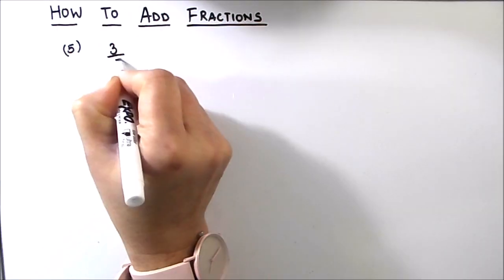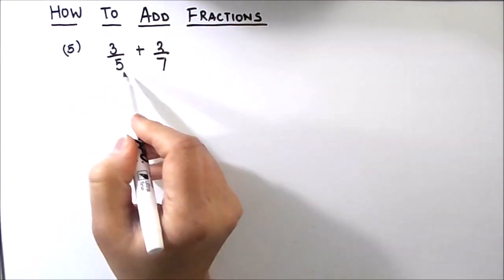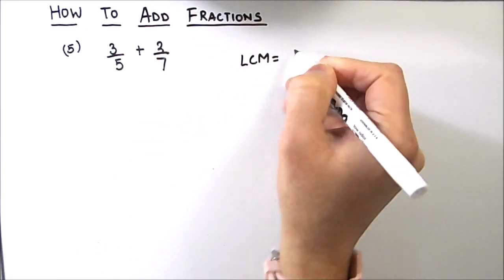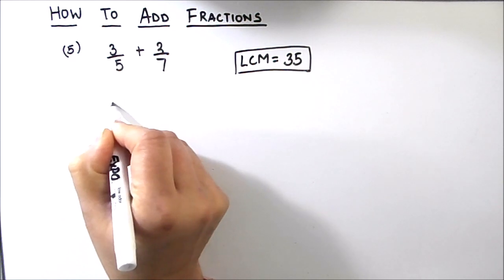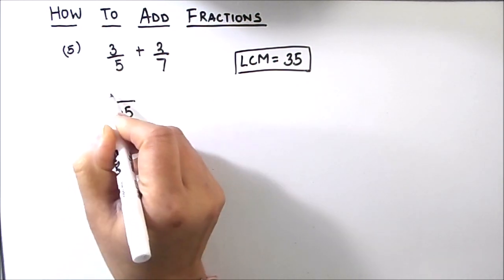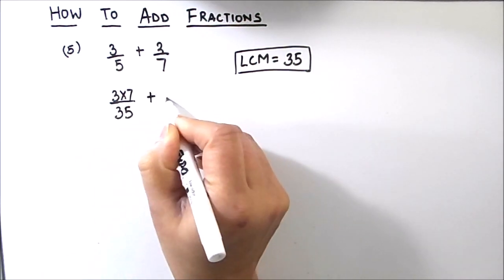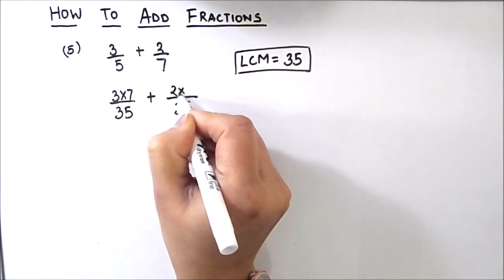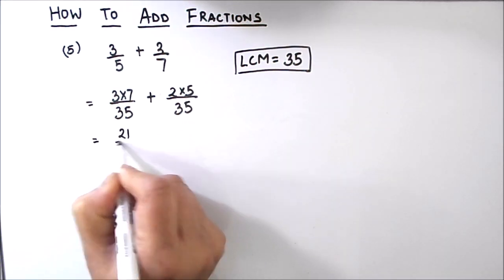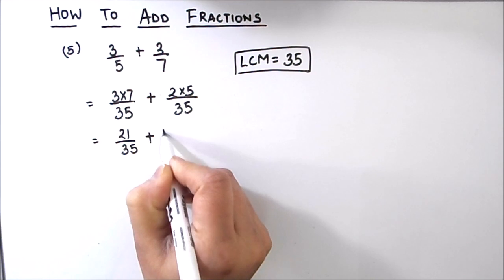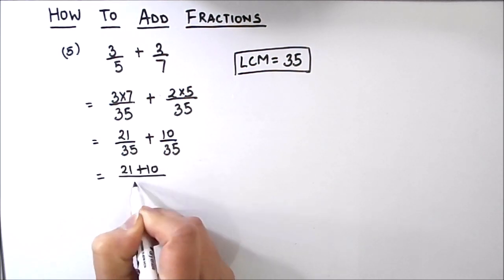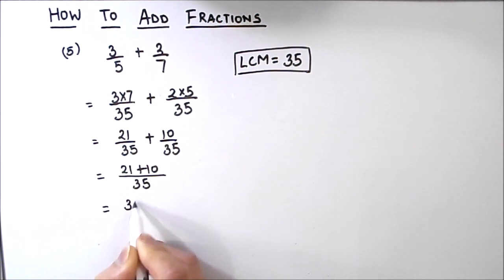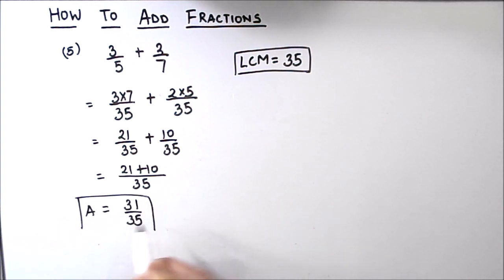Now let's move to our final example: 3 by 5 plus 2 by 7. The first step is to find the LCM; since 5 and 7 are coprime, LCM is 5 times 7 equals 35. We make both denominators 35. For 3 by 5, multiply numerator by 7 to get 21 by 35. For 2 by 7, multiply numerator by 5 to get 10 by 35. Adding: 21 plus 10 divided by 35 equals 31 by 35. These cannot be reduced further, so our final answer is 31 by 35.